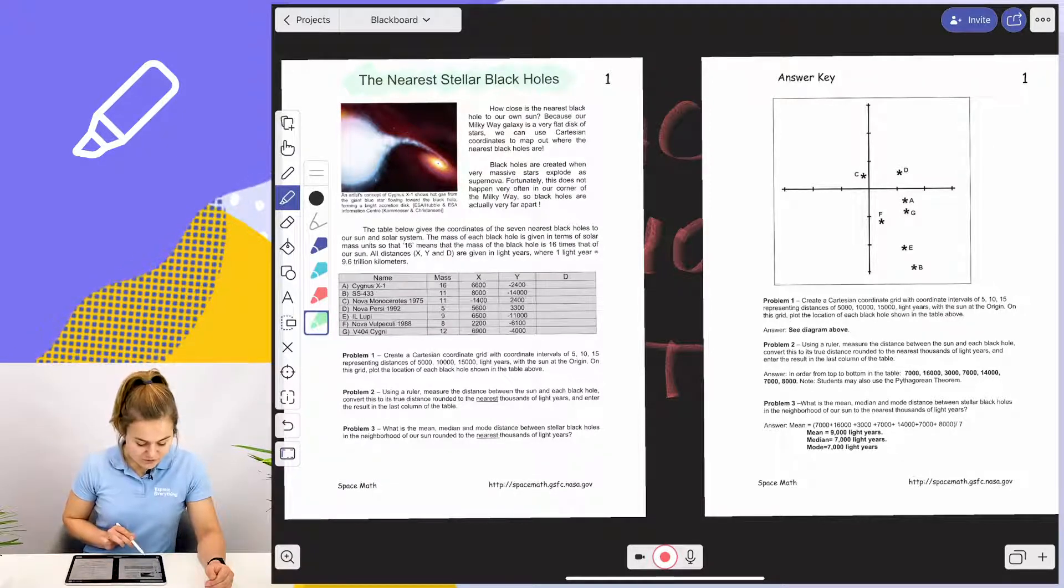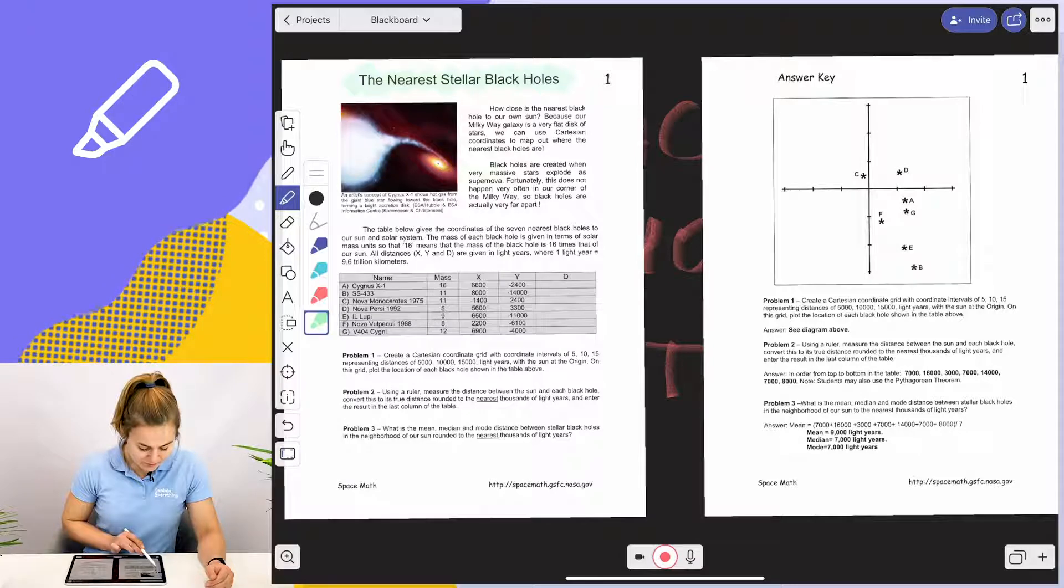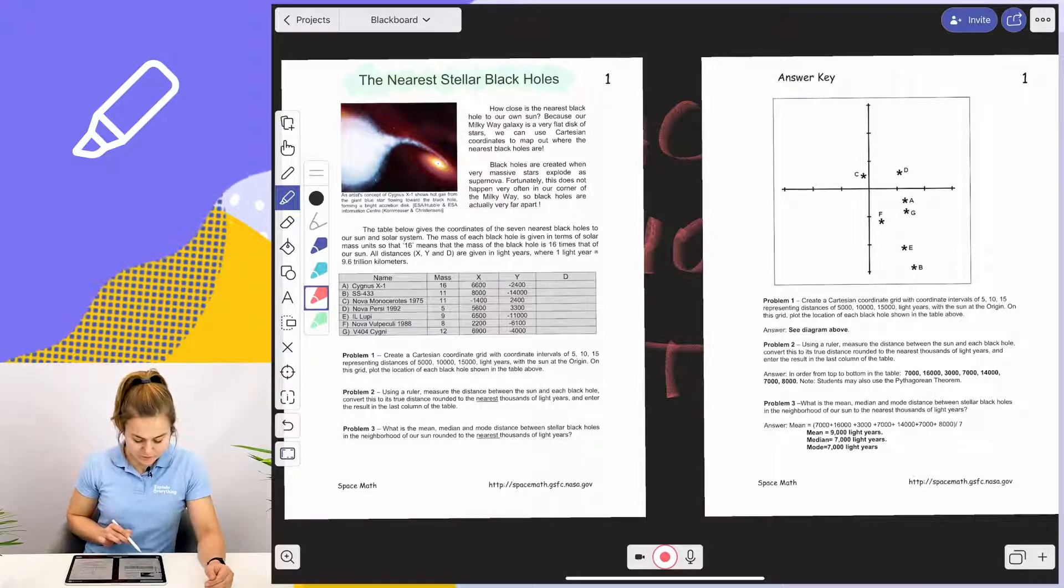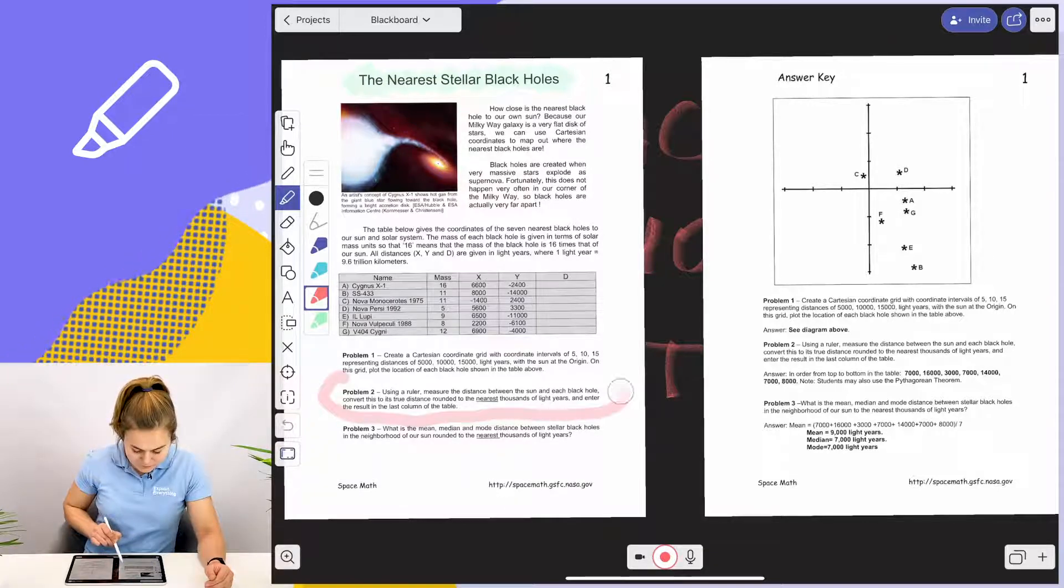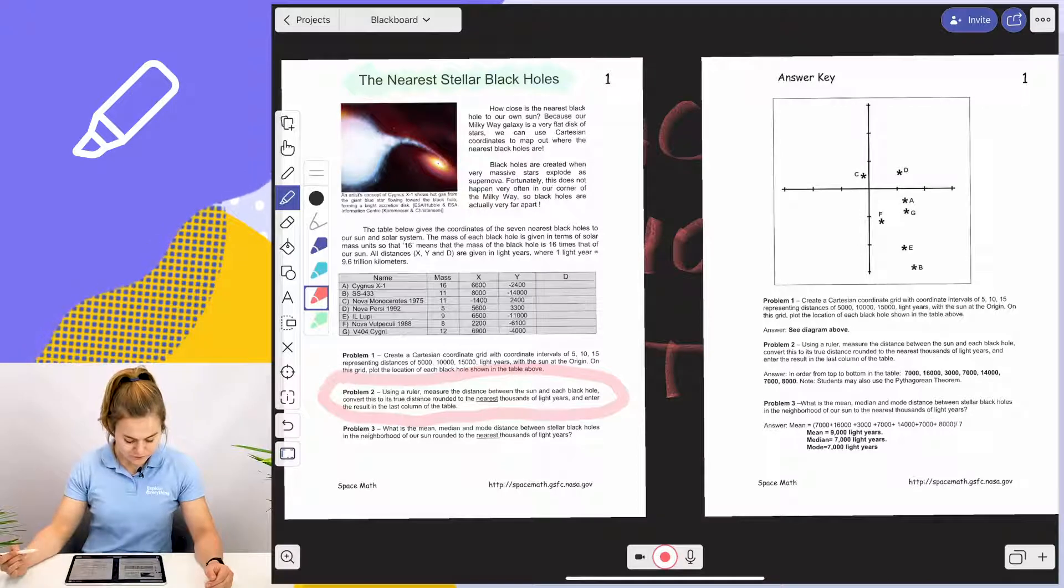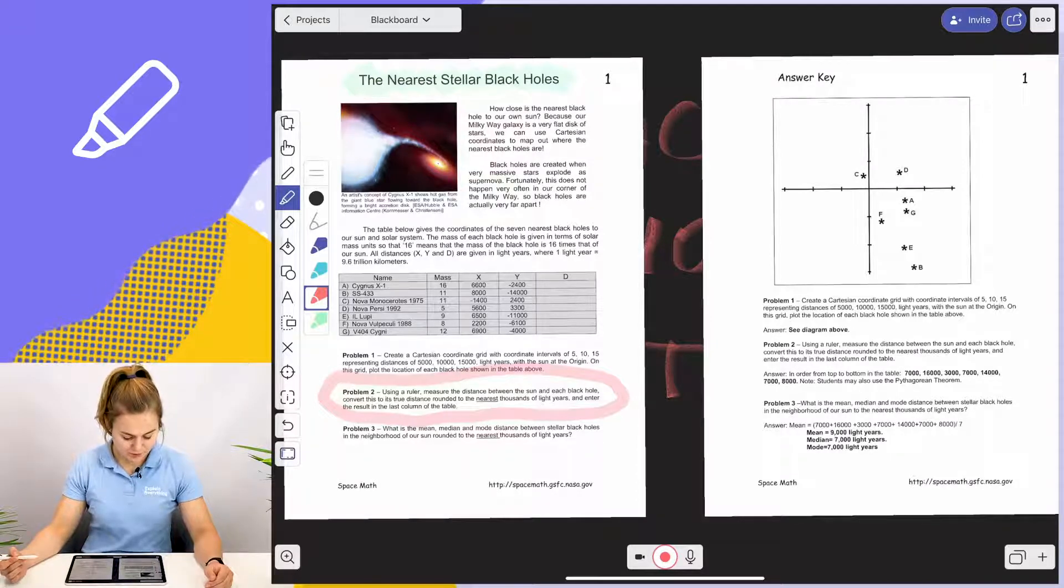If I want to use a different highlighter, I simply tap on another color. Let's say I want my students to do problem two for homework, so I'm going to use the highlighter tool to highlight that particular problem.